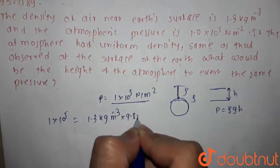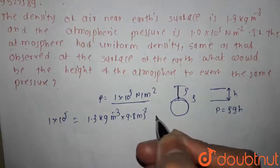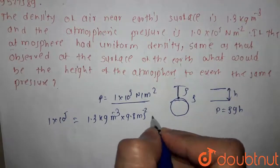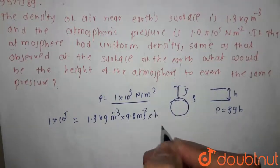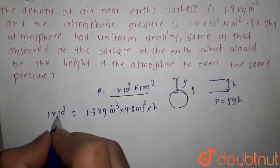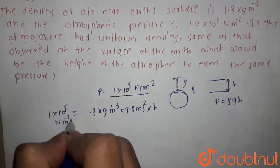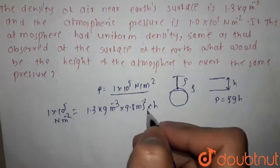And g, which is 9.8 meter per second square, and h. Newton to the power minus 2, 9.8 meter per second square.